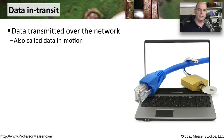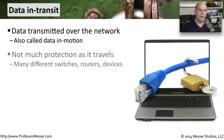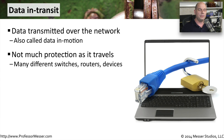Of the three states of data that we're going to discuss, the first one will be data in transit. This is sometimes called data in motion because it refers to the data that's being transferred across the network. As the name implies, we're sending information across the network, through switches, through routers, across wide area networks, to many different devices on the network.